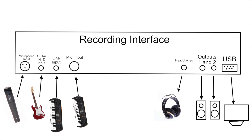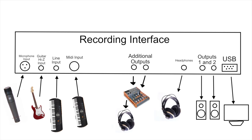Some recording interfaces have a lot more outputs, and there are many ways to use them. For example, you can use additional outputs for analog mixing, or routing the signal into analog gear and recording it back in. One use I like is connecting additional outputs to a mixer so the artist recording has it there with them — they plug their headphones into it and can control the volume of the track coming from the computer as well as the volume of themselves.